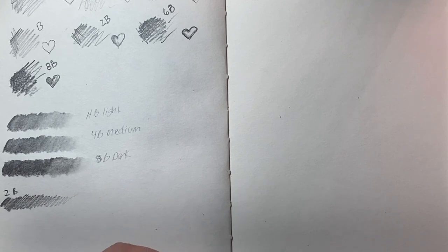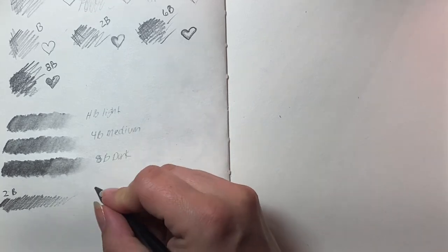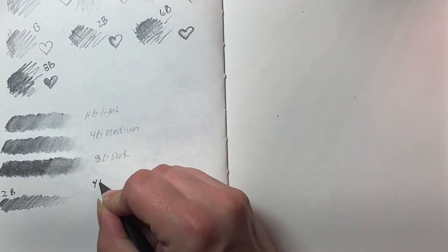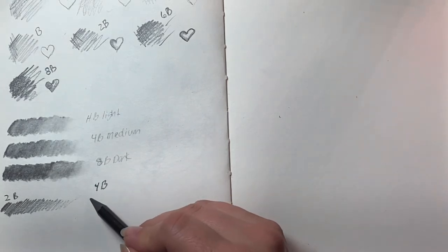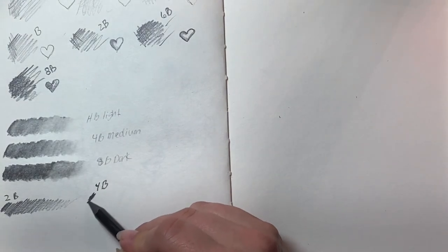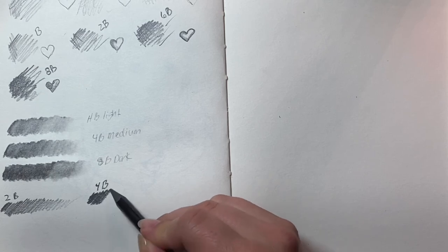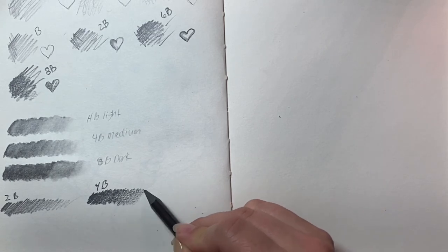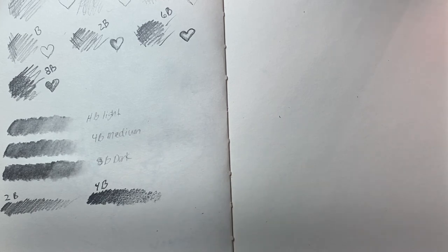This one I'm gonna go in order. 4B. 4B, my handwriting is horrendous guys sorry. Okay and we're gonna start hard pressure, make a gradient. And that is the 4B.